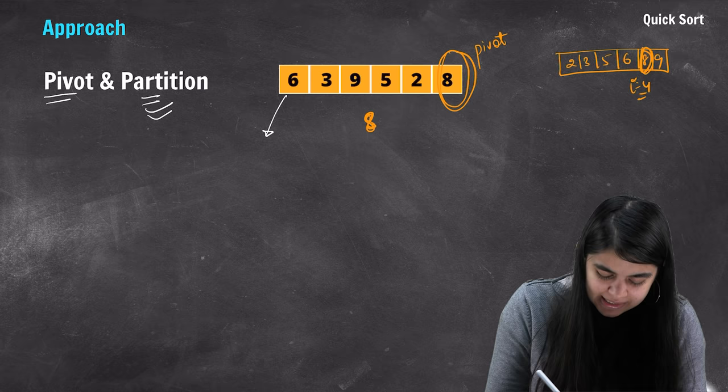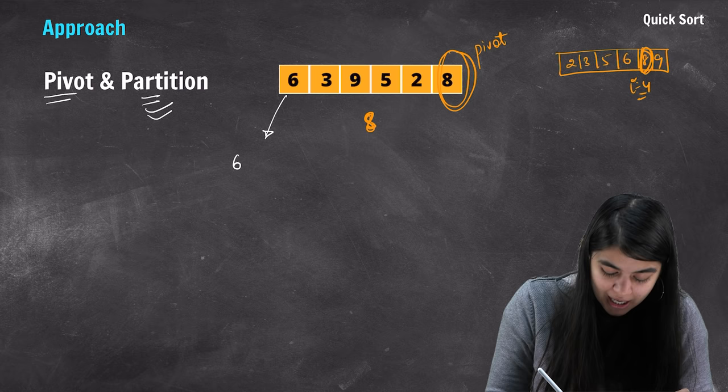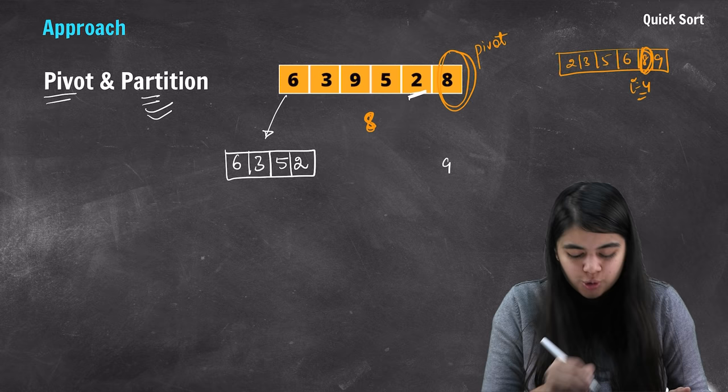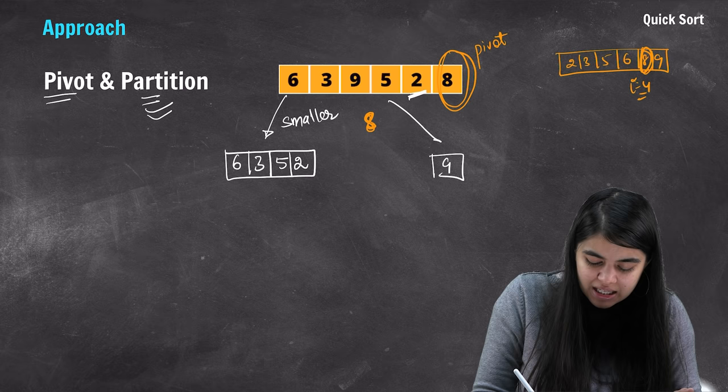For example, elements smaller than pivot 8 would be 6, 3, 5, 2. Elements larger than pivot 8 would be 9. So what happens here is that on one side all smaller elements are placed, and on the other side all larger elements are placed.